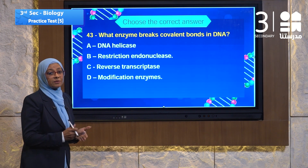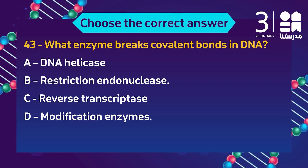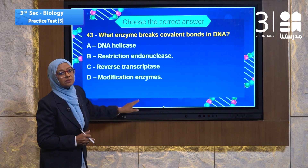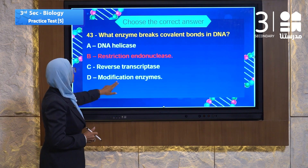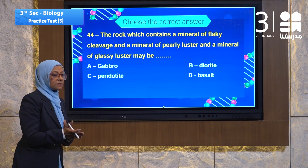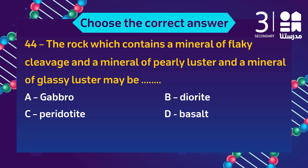Question 43 is about DNA covalent bonds. The enzyme that breaks covalent bonds in DNA — looking for the name in correct terminology among: DNA helicase, restriction endonuclease, reverse transcriptase, or modification enzyme — the answer is B, restriction endonuclease.